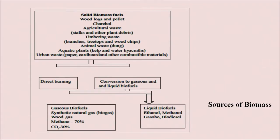There are solid, liquid and gaseous sources of biomass. Solid biomass fuels include wood logs and pellets, charcoal, agricultural waste, stocks and other plant debris, timbering waste like branches, tree tops and wood chips, animal waste which includes dung, and aquatic plants like kelp and water hyacinth.